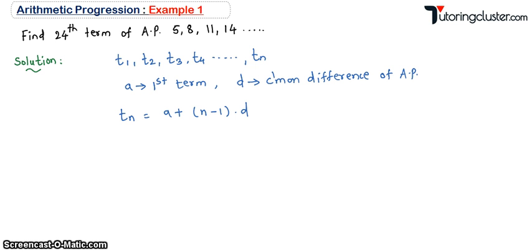Now in the given example, what is a, that is the first term? The first term is 5. What is n? We need to find the 24th term, so n will be 24. What is d, the common difference? 8 minus 5 is 3, 11 minus 8 is 3, so the common difference is 3.